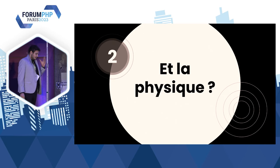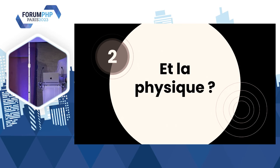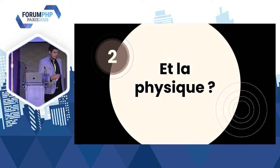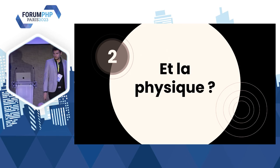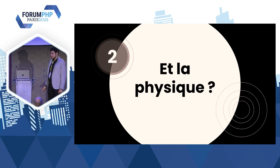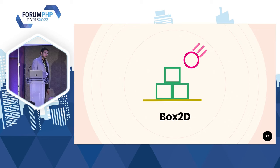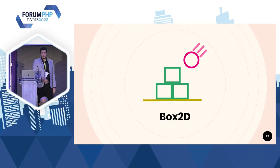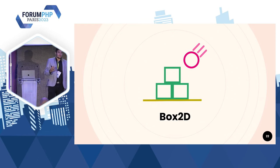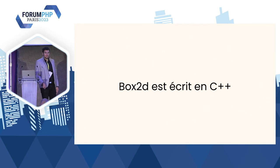La physique, c'est quelque chose de plus compliqué. On a des librairies très complexes qui permettent de gérer la physique. Construire une librairie autour de la physique, c'est l'histoire d'une vie — beaucoup de travail, c'est très complexe, beaucoup de cas à gérer. Il y a des librairies qui existent, et Dieu merci, on va essayer de les utiliser. J'ai choisi Box2D — ce n'est pas un choix innocent, c'est une librairie très connue, développée dans plein de langages, et c'est également celle que j'ai utilisée dans la version JS de Gangball. Sauf que Box2D, c'est du C++.